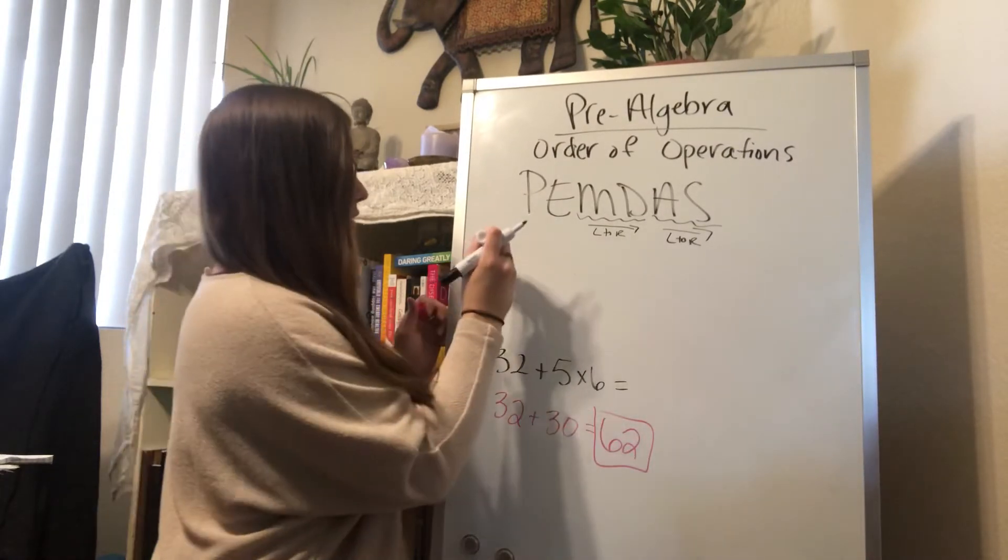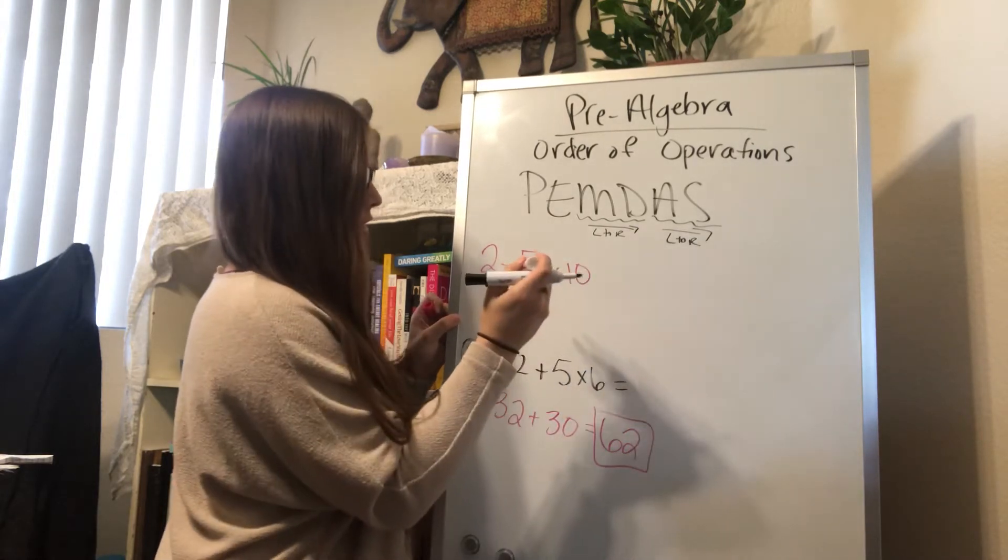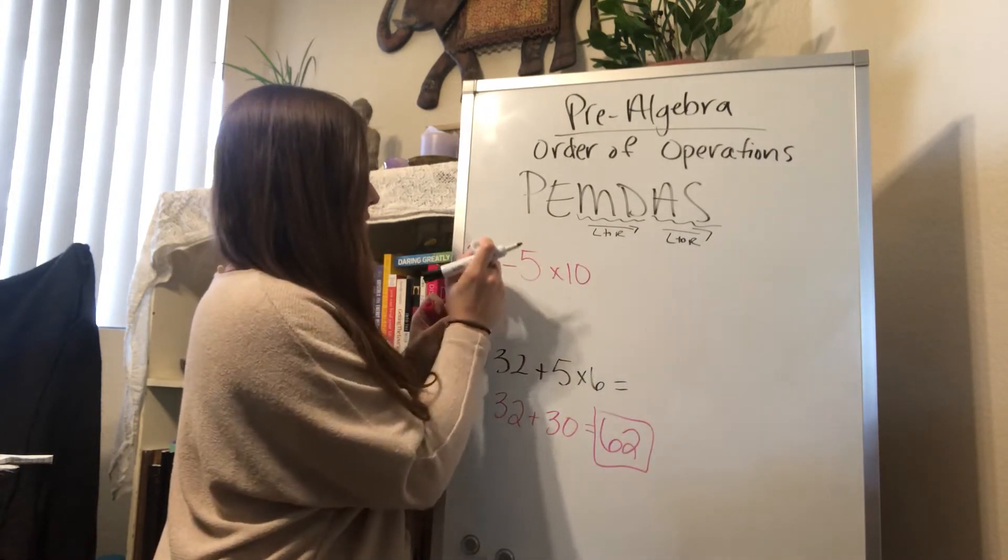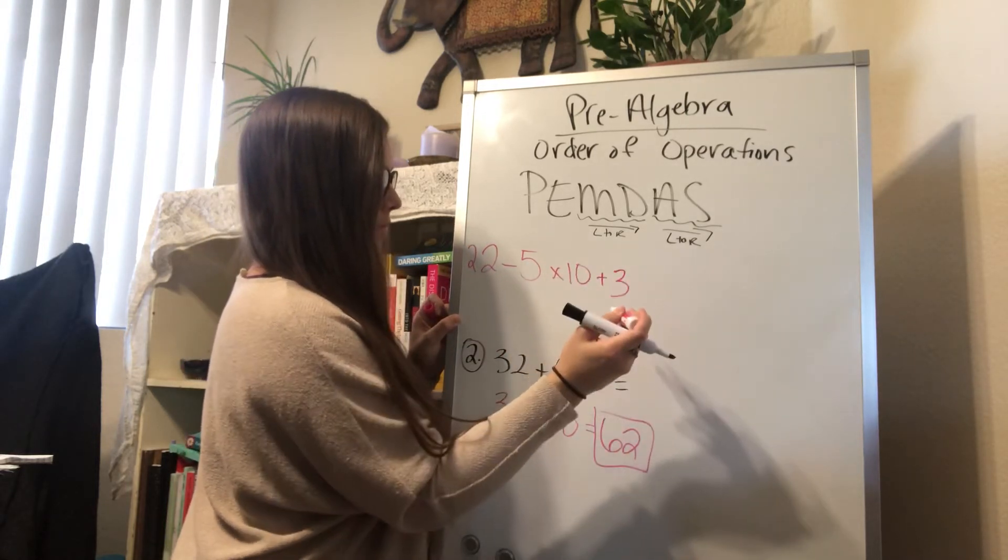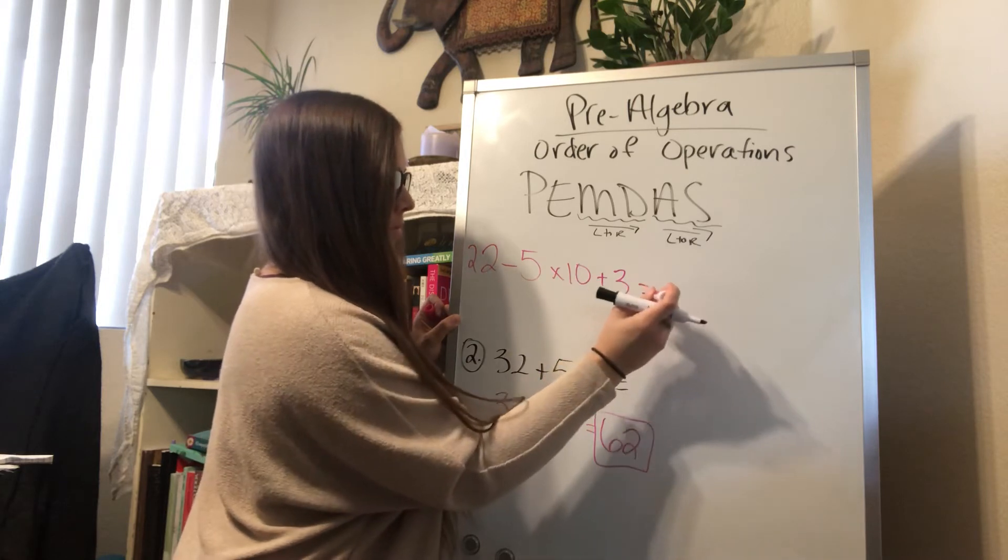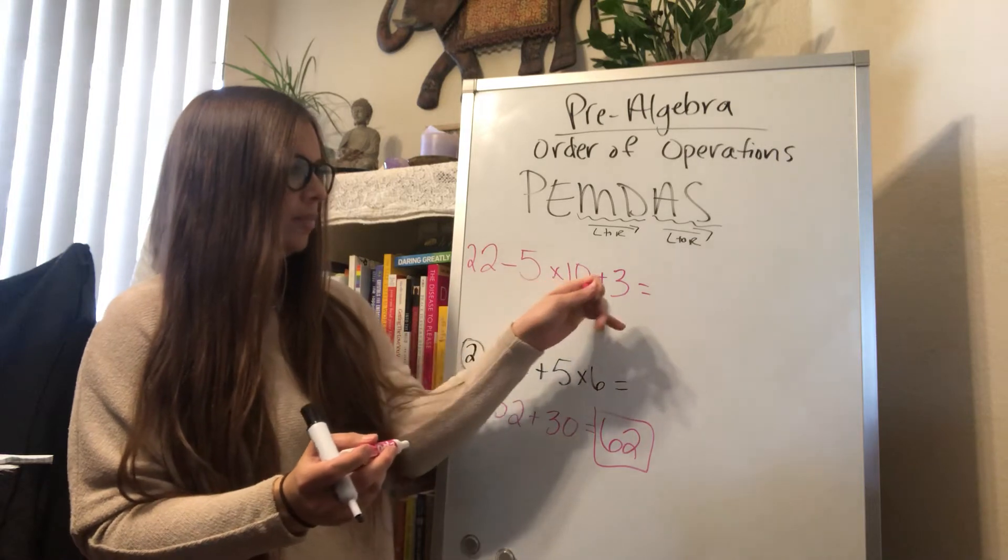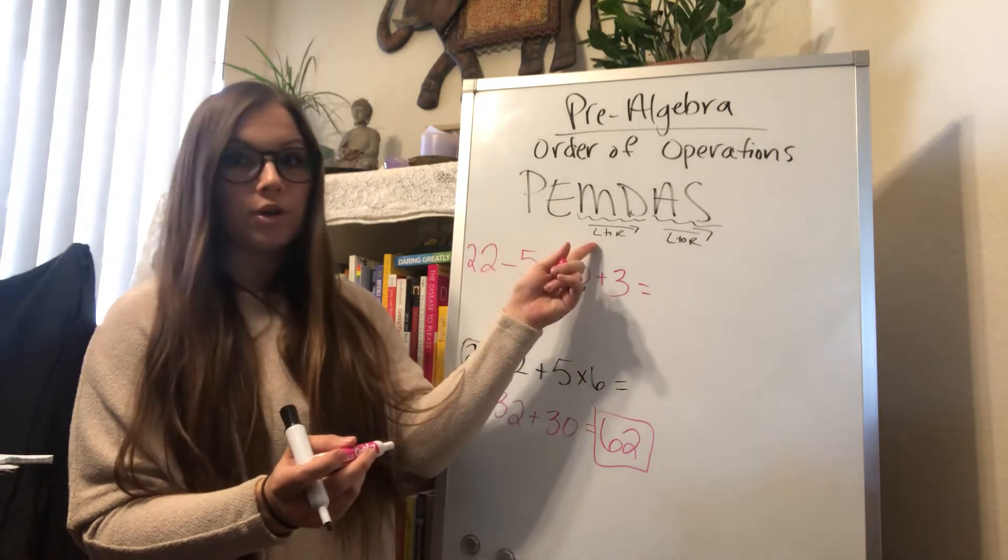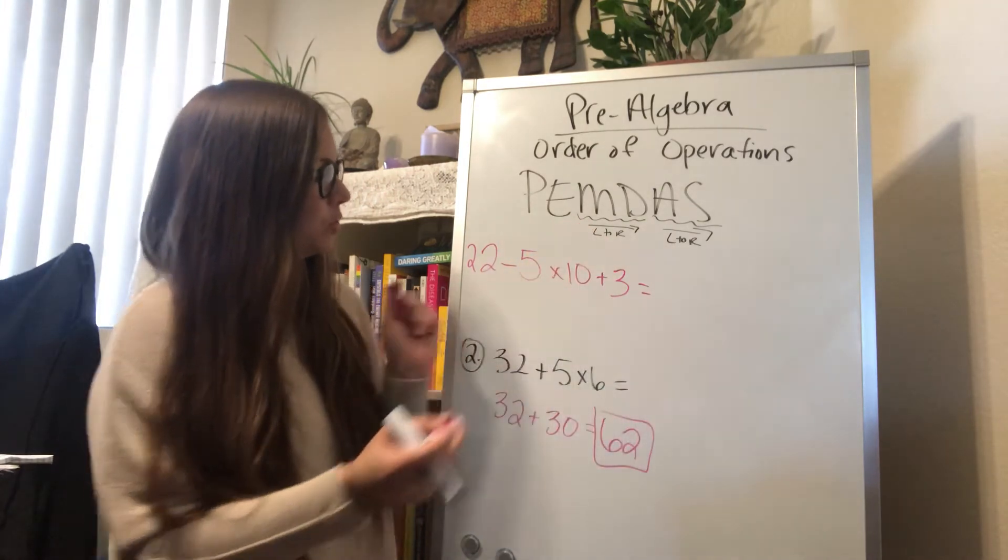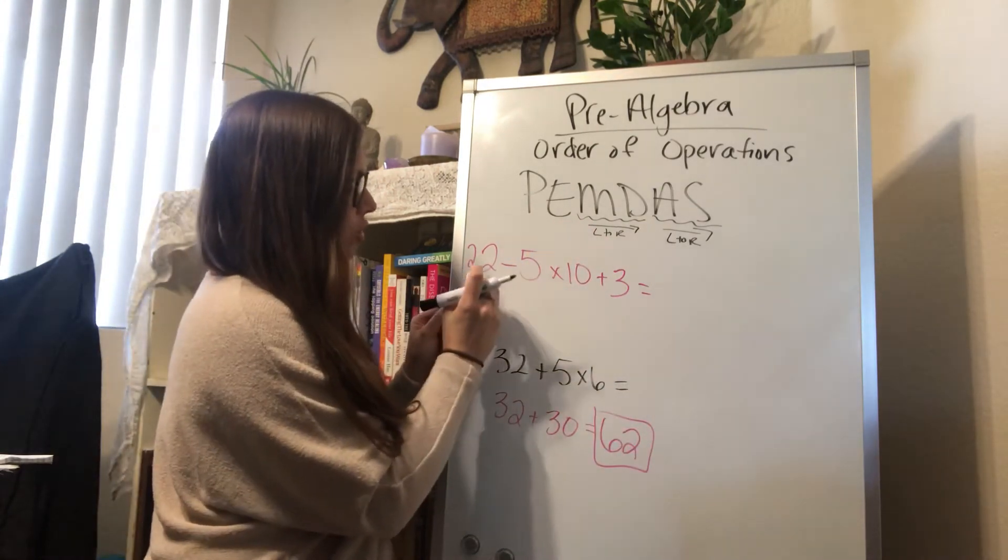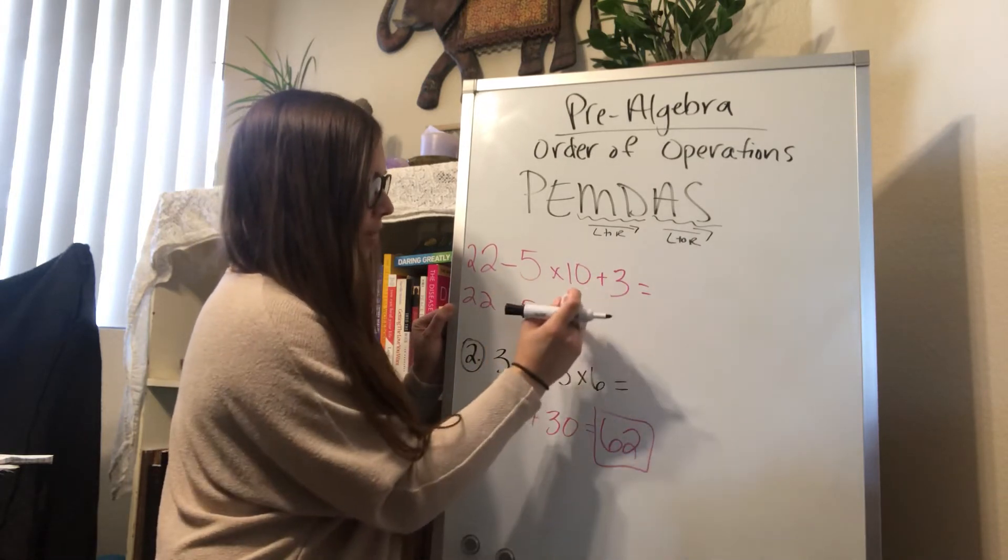Let's say you had 22 minus 5 times 10 plus 3. So I have 22 minus 5 times 10 plus 3. So I'm going to go in my order of operations. So parentheses, exponents, multiplication. So we'll do multiplication. So I'm going to bring down my 22. Negative 5 times 10 is negative 50. I'm going to bring down my plus 3.